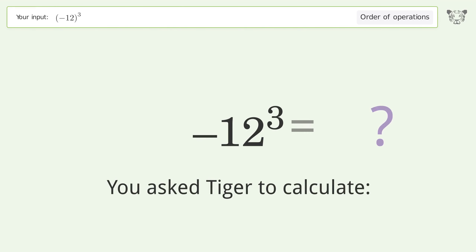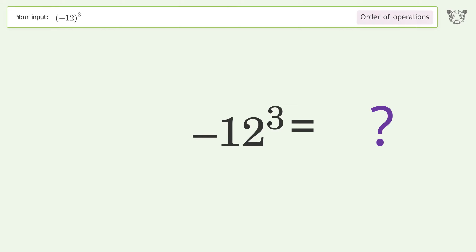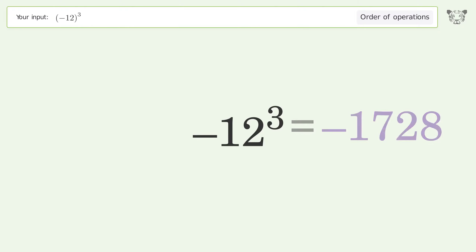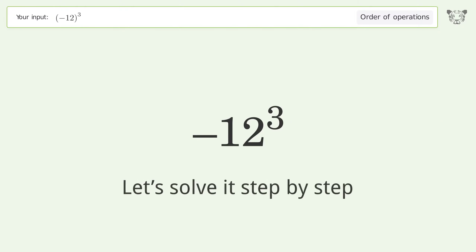You asked Tiger to calculate this — it deals with the order of operations. The final result is negative 1728. Let's solve it step by step.